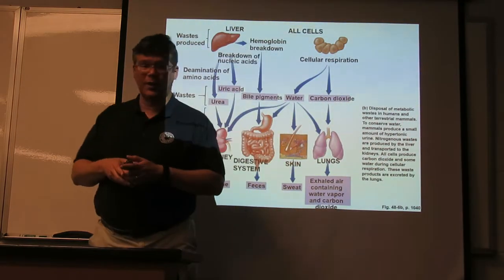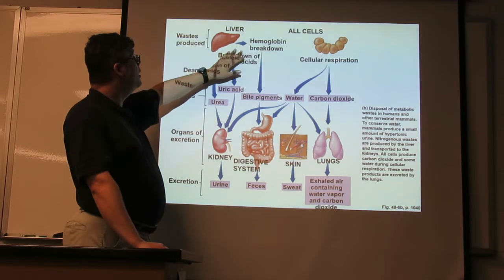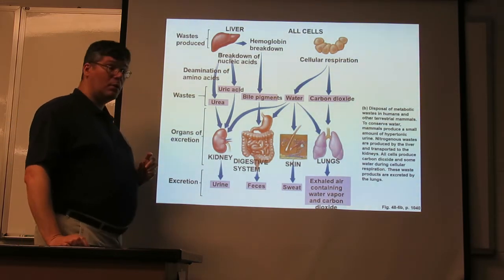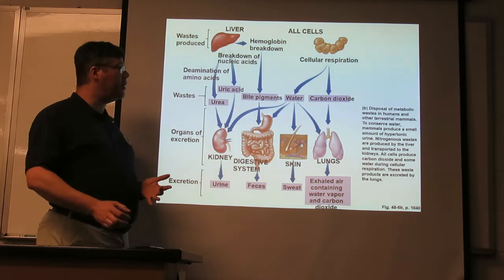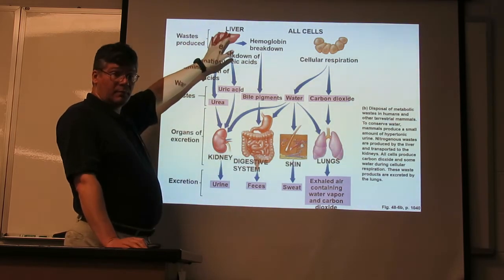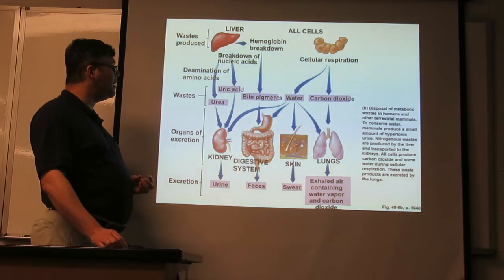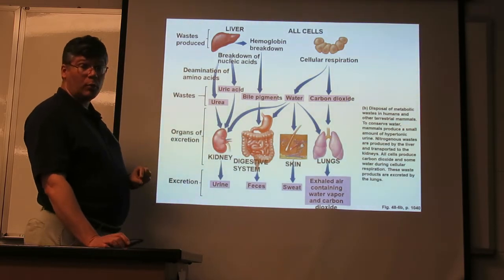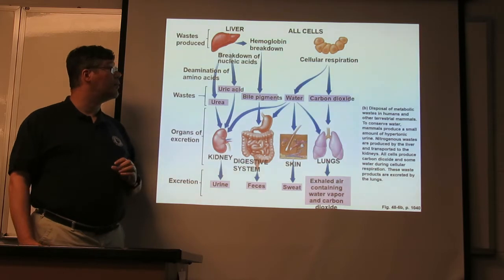In addition to all our cells doing their respiration, we have some other processing that primarily happens in the liver. Hemoglobin is our key protein for carrying oxygen in the blood. Our red blood cells have no nucleus, so they're not making new material — they'll eventually break down and be replaced by new ones. We've got a lot of old hemoglobin to deal with, and breaking it down makes bile pigments — dark-colored chemicals containing iron from the hemoglobin. The bile pigments are secreted into the digestive system and go out with the feces, which is why your poop is typically dark colored.